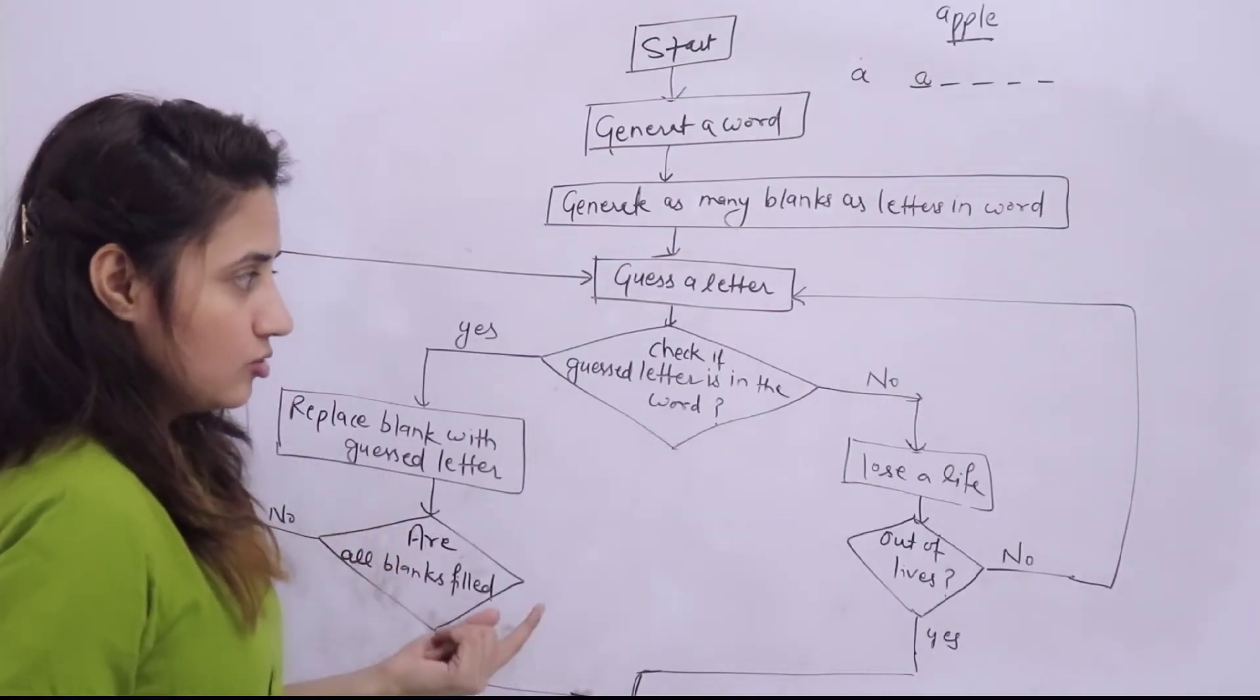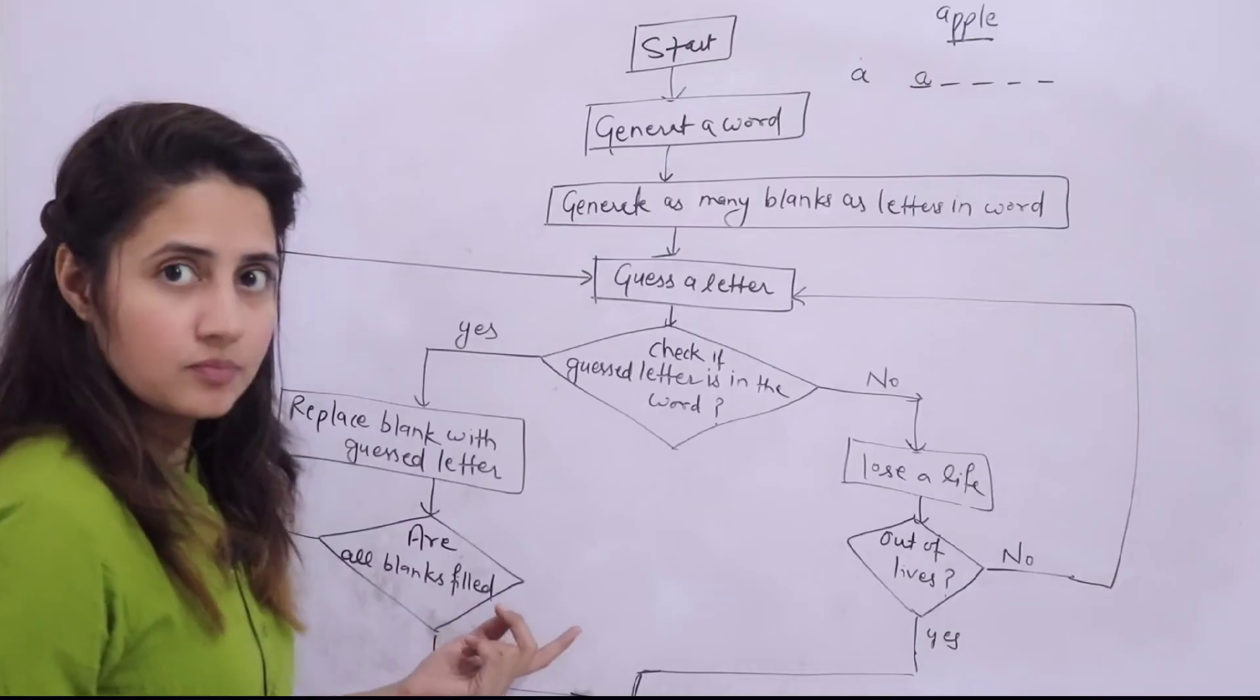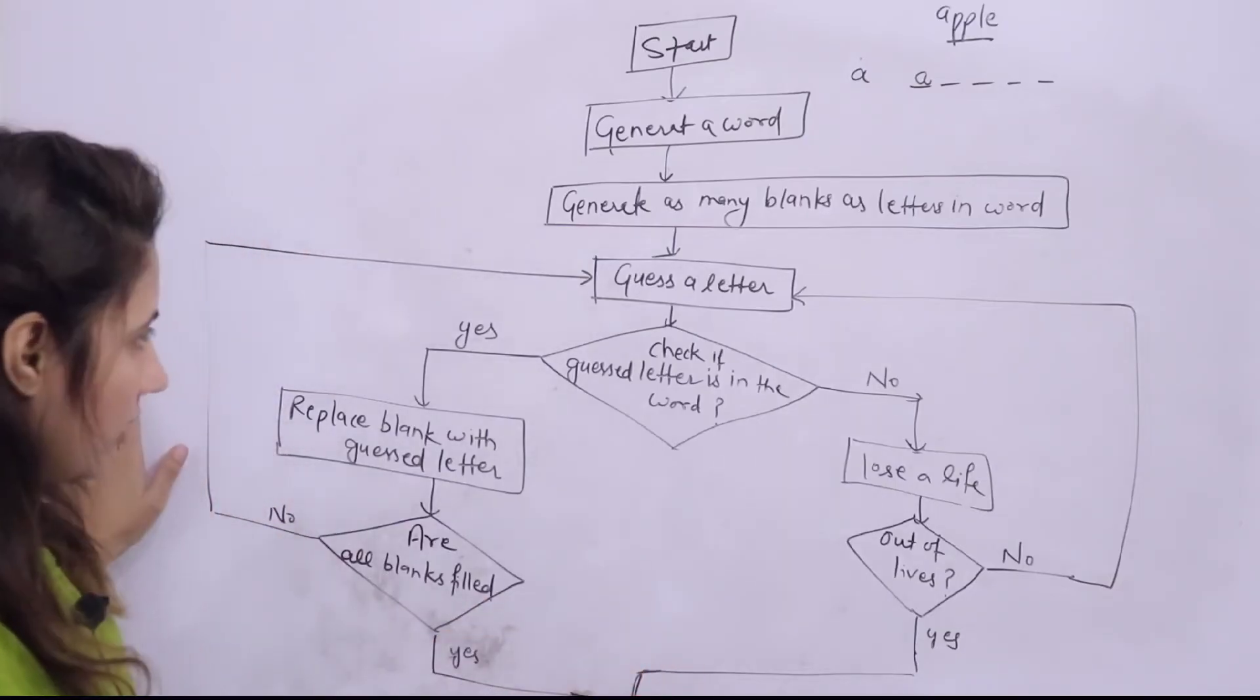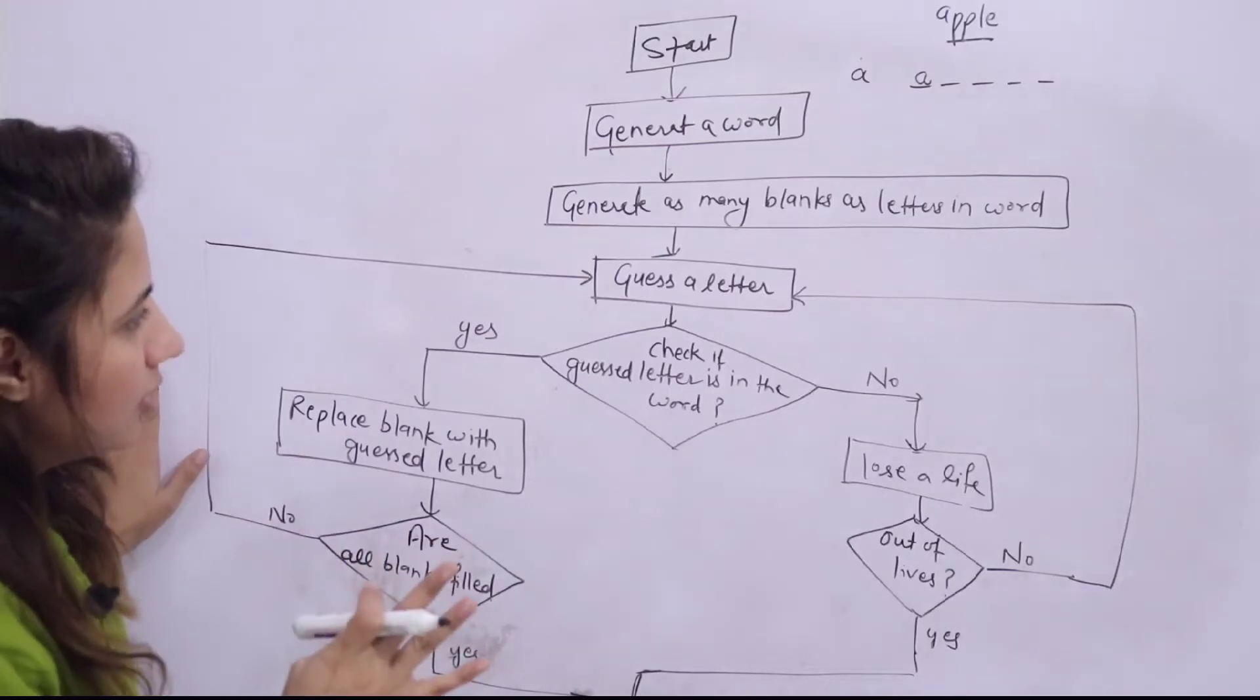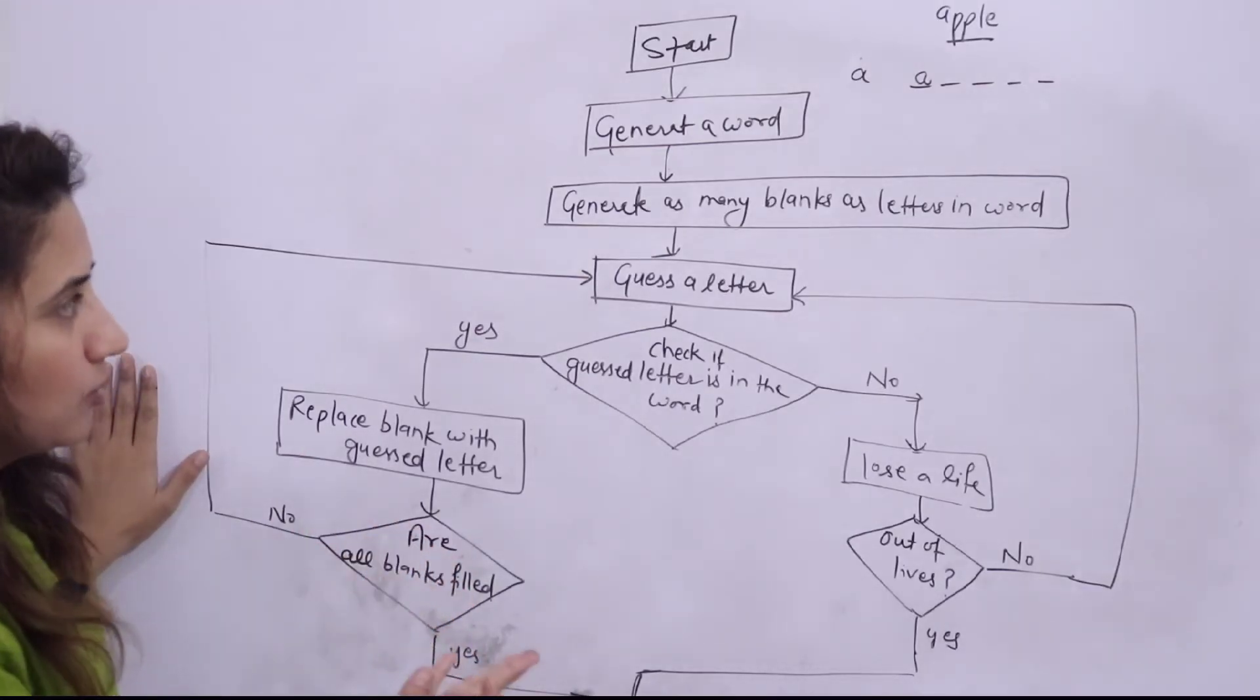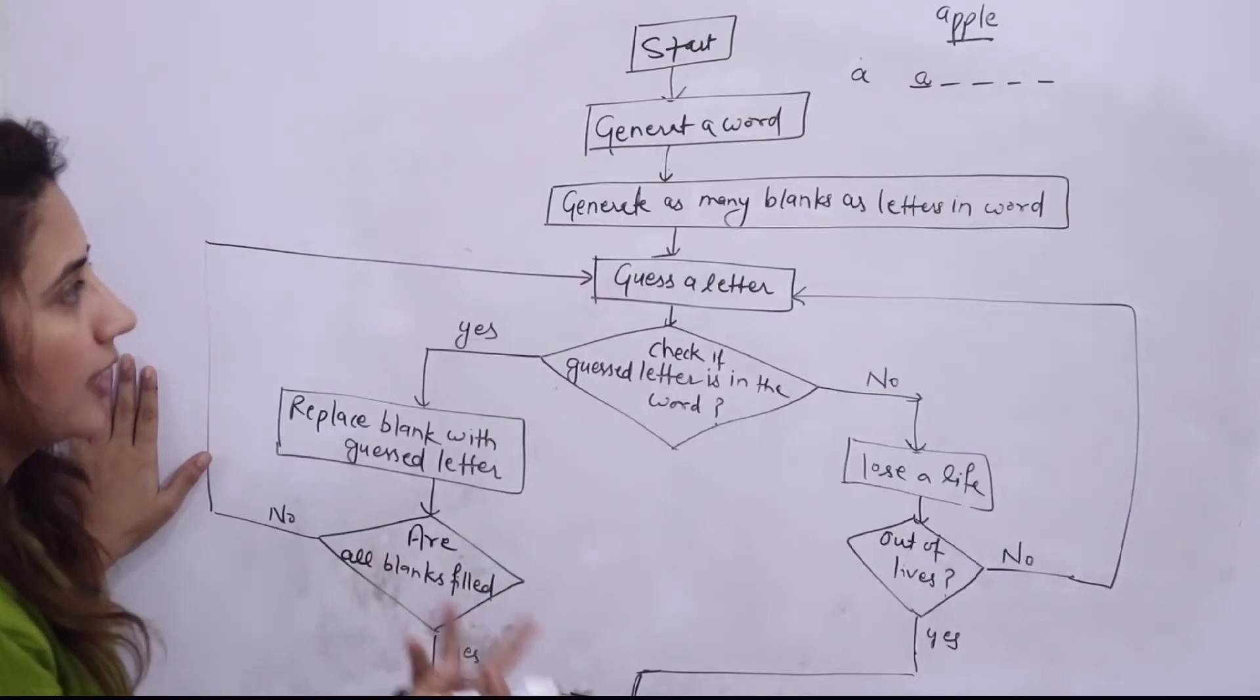So I guess this is not too tough. This is the flowchart of Hangman game. Now according to this flowchart, we have divided our problem into simpler ones. Now you have to write down the code.